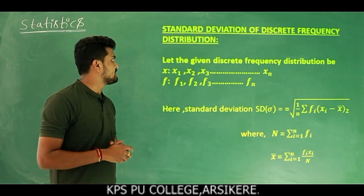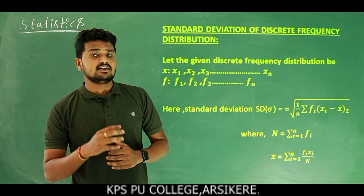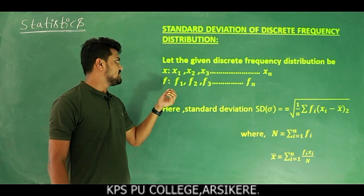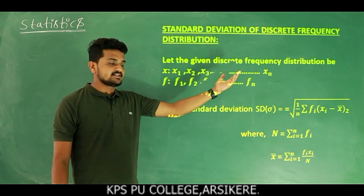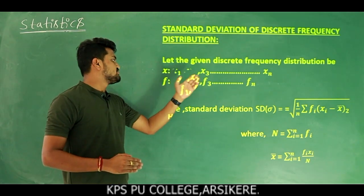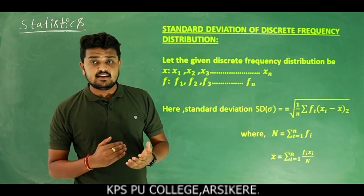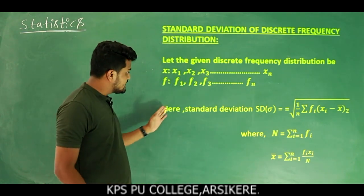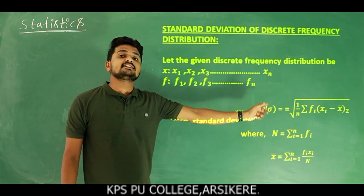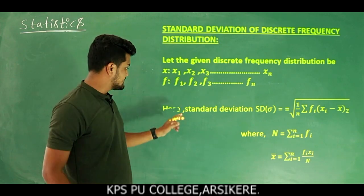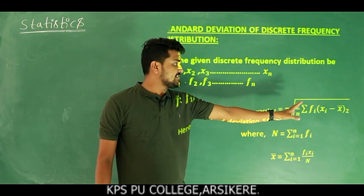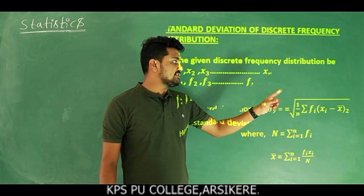Standard deviation of discrete frequency distribution. Let the given discrete frequency distribution have values x1, x2, ..., xn with corresponding frequencies f1, f2, ..., fn. The standard deviation formula is: sigma equals square root of (1/n) × summation of fi × (xi minus x̄) whole square. Without the square root, you get the variance.